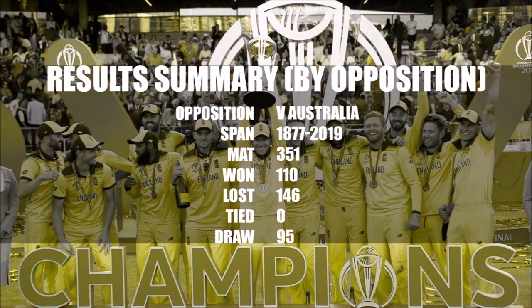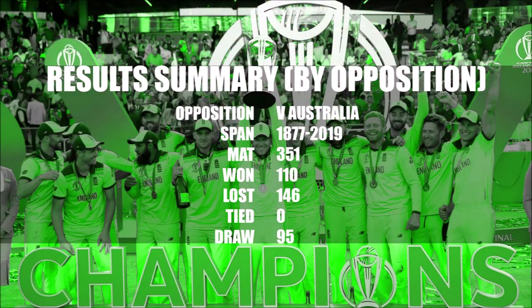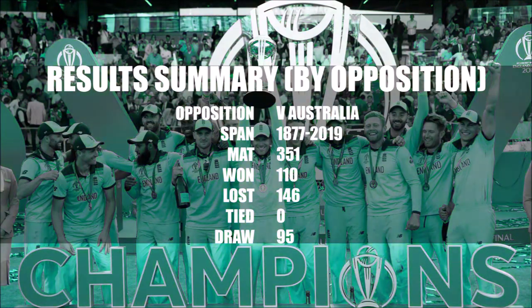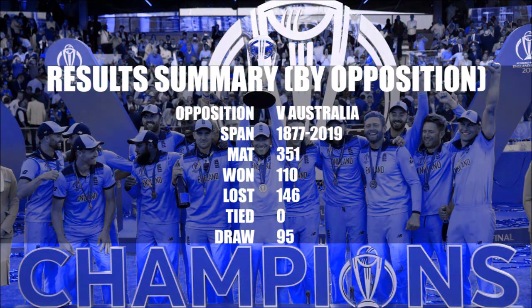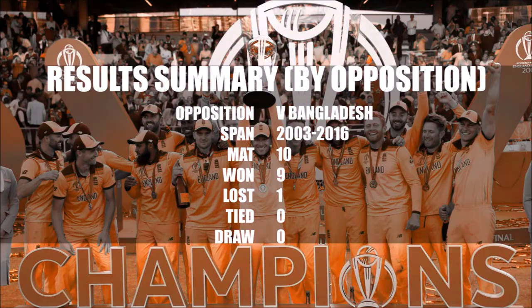Results summary against Australia: Span 1877 to 2020, matches played 351, won 110, lost 146, drawn 95.